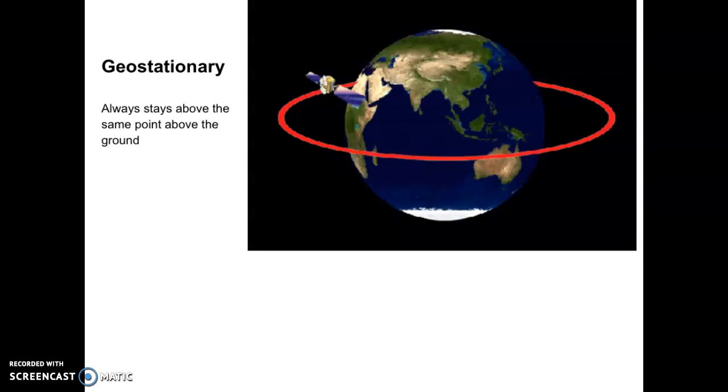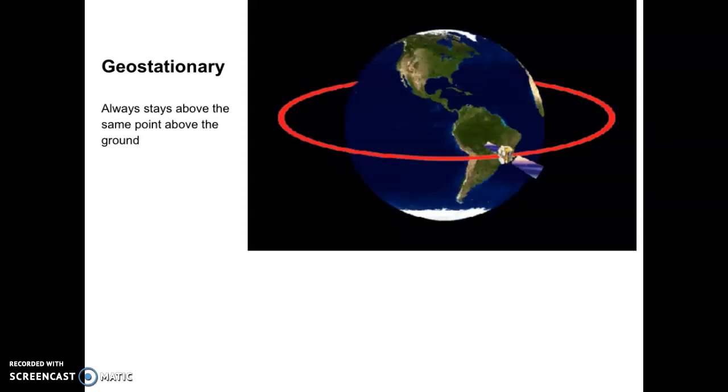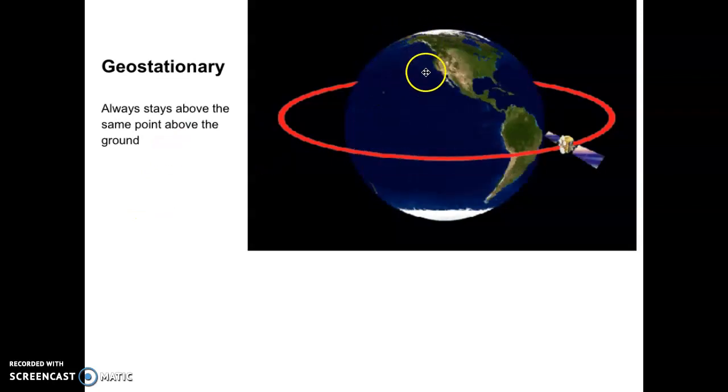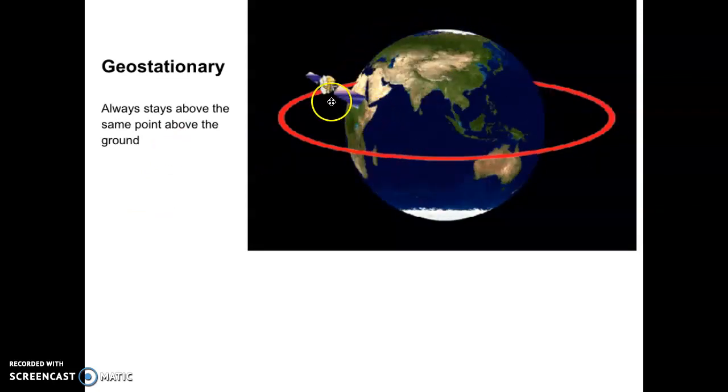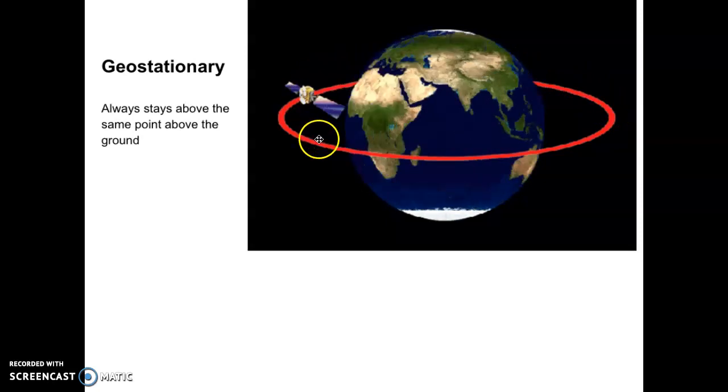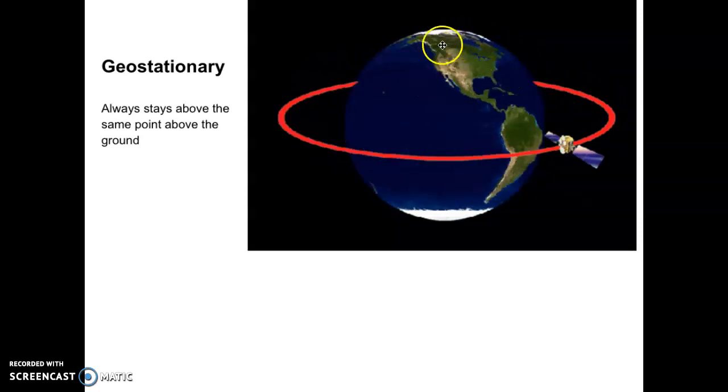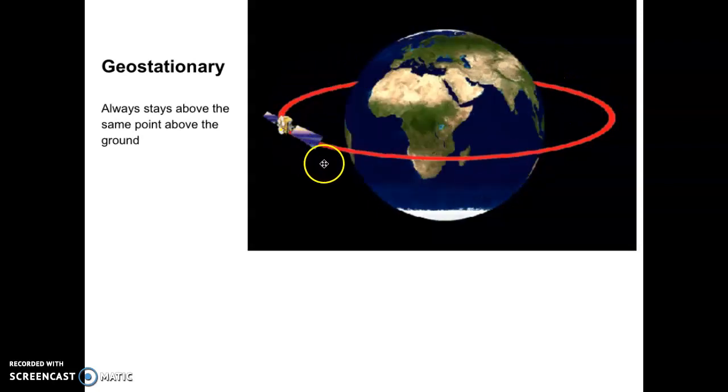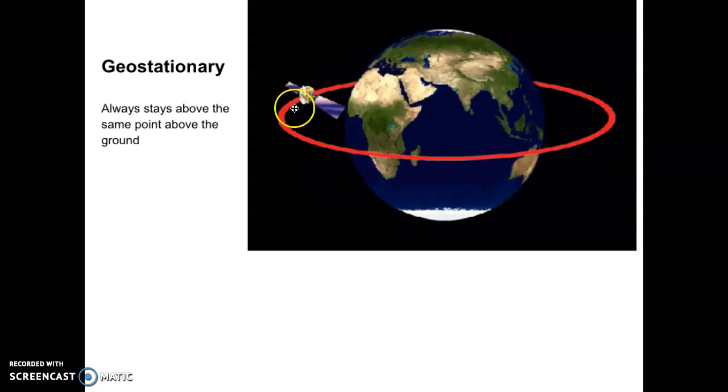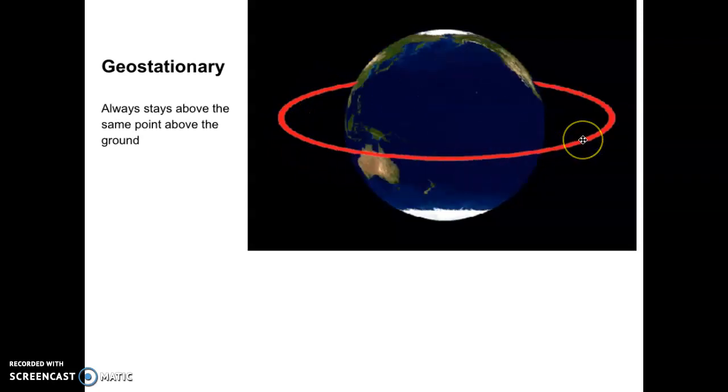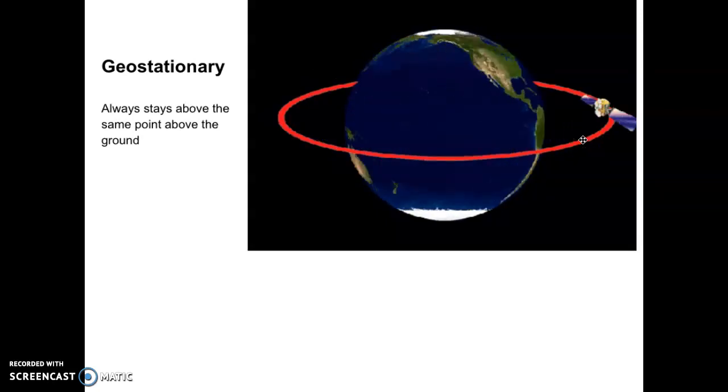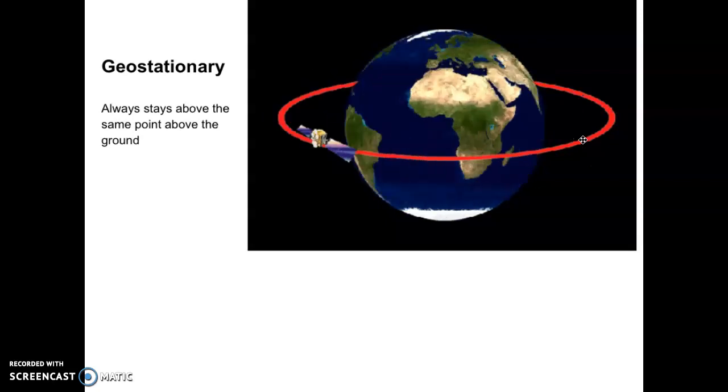Geostationary satellites are always above the same point or same position of the planet. As the Earth is rotating, the orbit of the satellite is such that it has the same period of rotation. So if the Earth takes 24 hours to spin around, the satellite also takes 24 hours to spin around, and that way it's always above the same position. That's really important if you want to use that satellite to constantly reflect a signal to the same position.